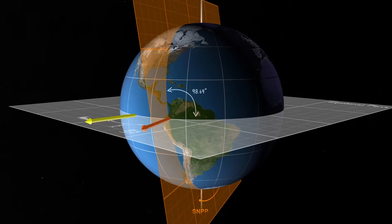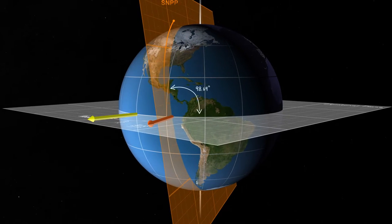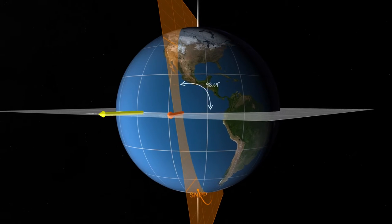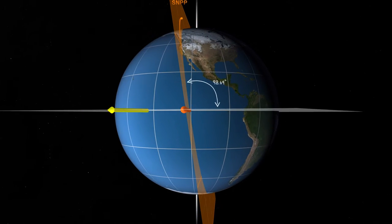This angle is fixed for JPSS orbits, so the satellite will always cross the equator at the same time. The angle between the plane of the equator and the orbit plane is called the orbit's inclination, which in this case is about 99 degrees.